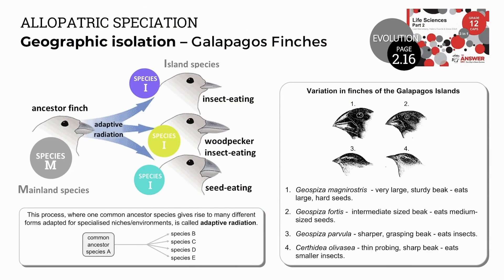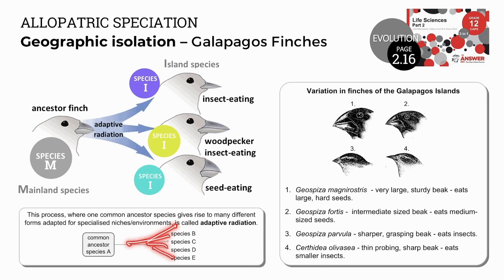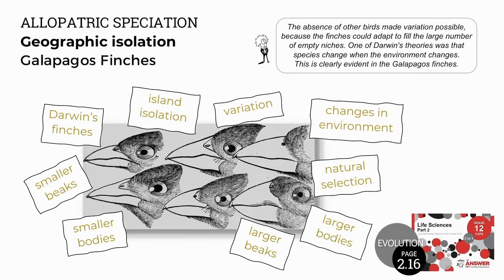The example of the Galapagos finches also illustrates adaptive radiation, because one ancestor finch species from the mainland gives rise to many different species on the islands that are adapted to different environments or different niches — for example, different beaks for different foods, beaks adapted for large or small seeds, or for different size insects. A common ancestor species A gives rise to species B, C, D, or E. This is known as adaptive radiation. Because there were many empty niches available on the isolated islands, Darwin suggested that different adaptations of the finches could fill these empty niches. He also believed that species change when the environment changes, and this is illustrated by the example of the Galapagos finches.